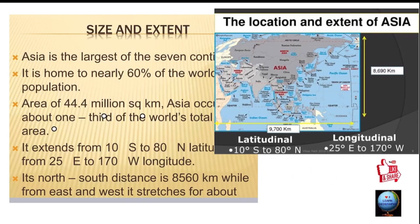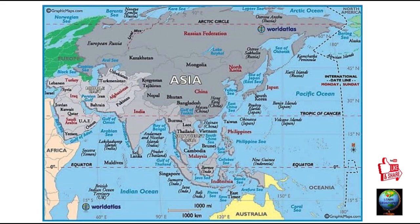Asia is the largest continent of all the seven continents, and nearly 60 percent of the world's population reside here. The area of Asia is 44.4 million square kilometers. The latitudinal extent of Asia is 10 degrees south to 80 degrees north, and the longitudinal extent is 25 degrees east to 170 degrees west.